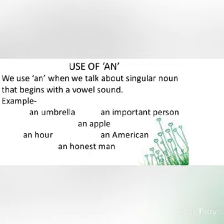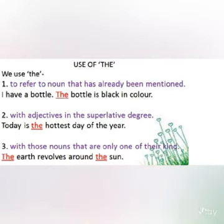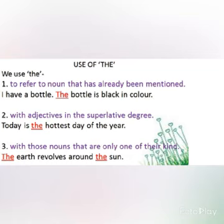Now let's see the use of 'the'. To refer to a noun that has already been mentioned — when we are talking about something for the first time, we use 'a' or 'an'. But when we are talking about the same thing for the second time, then we use 'the'. For example, 'I have a bottle' — here bottle is indefinite, we are talking about it for the first time. Whereas, 'the bottle is black in color' — we will use 'the' because we have already talked about the bottle and now it has become definite.